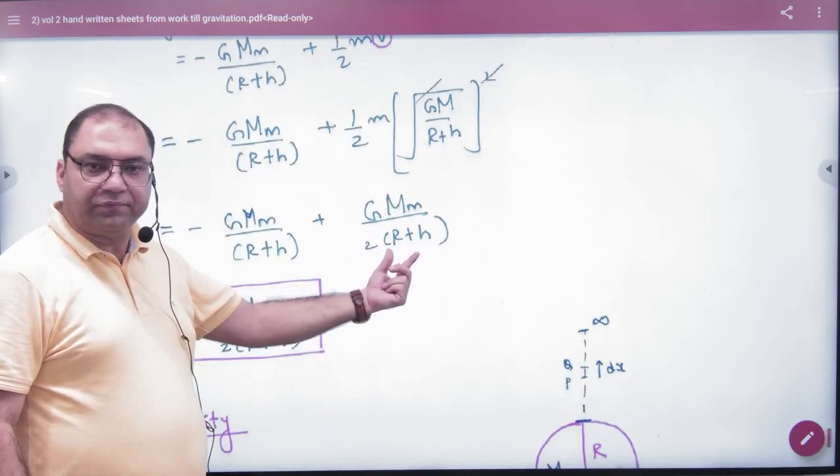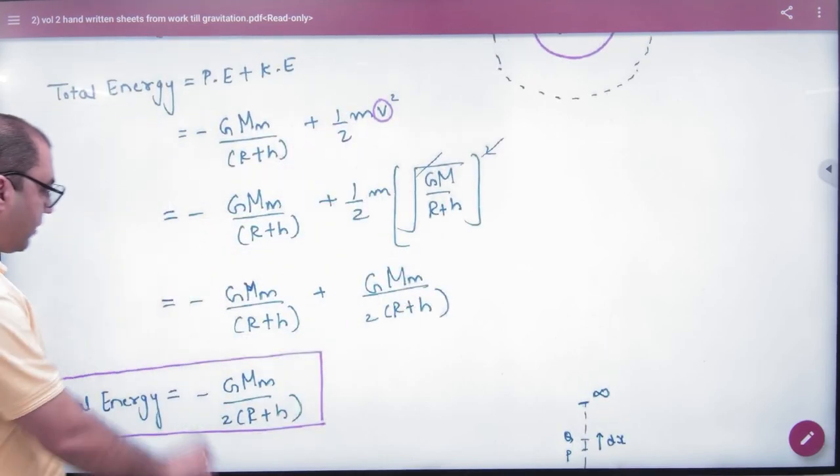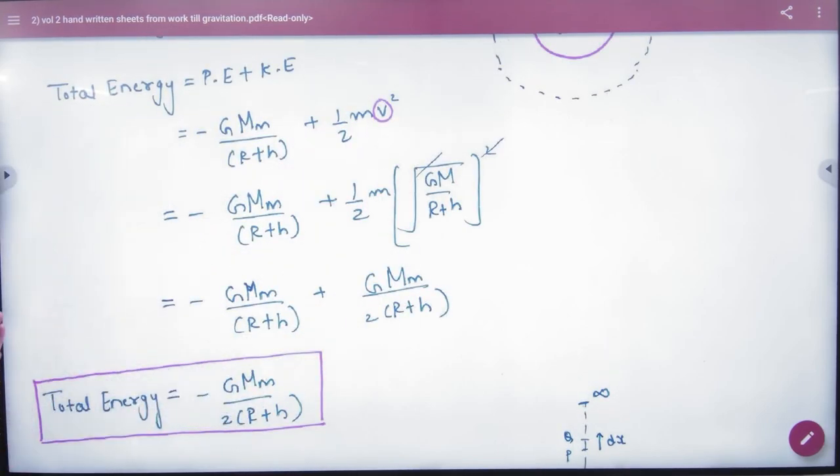Under root square cancel. This is kinetic energy, this is potential. Simplify it is kinetic, add it is total. It will be done.